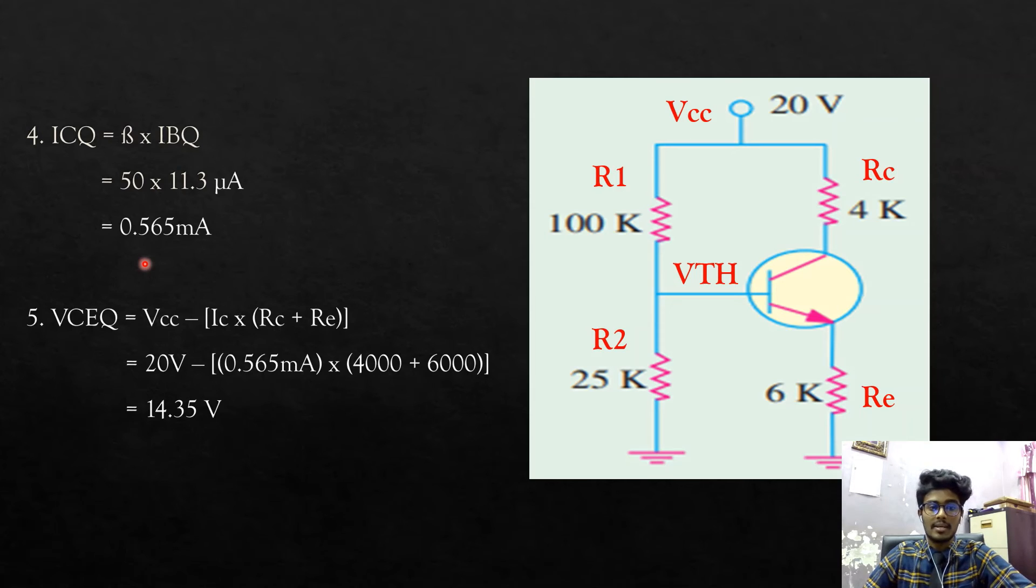For the last question is Vceq. For Vceq equals to Vcc minus in bracket IC times Rc plus Re. IC is ICQ, we already found 0.565 milliampere. So, 20 volt minus ICQ is 0.565 milliampere times the Rc which is 4 kilo and the Re which is 6 kilo. Which is converted to its normal unit, which becomes 4000 ohm plus 6000 ohm. We will get the answer for Vceq is 14.35V.